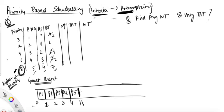Now the next process that will be executing is the next highest priority remaining. P4 is not done — it has the next highest priority. So execute P4 for how much? Its burst time requires two more, so execute for two units of time — it becomes zero.